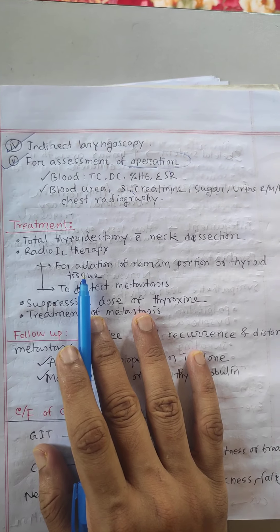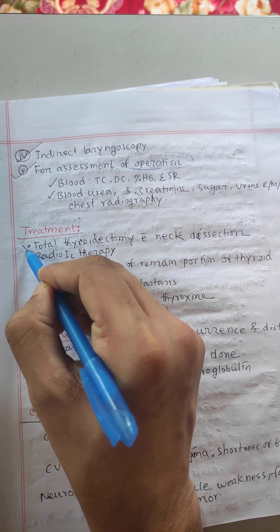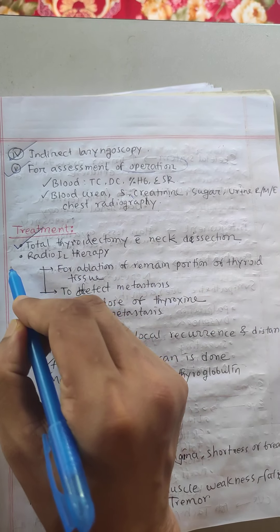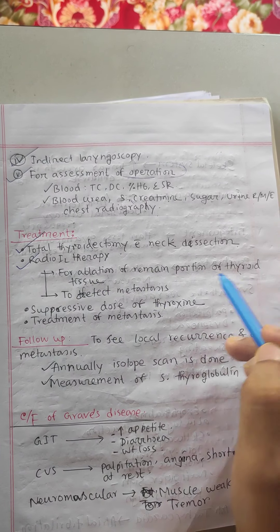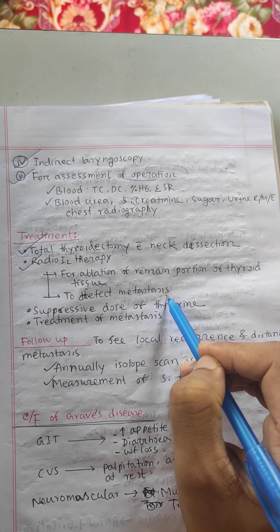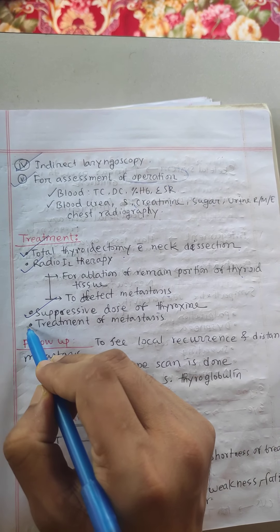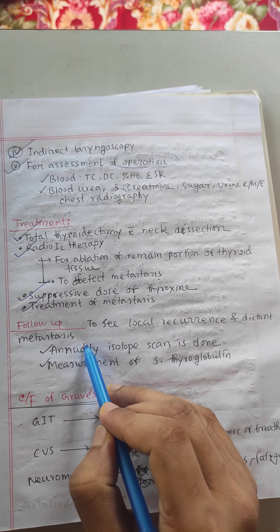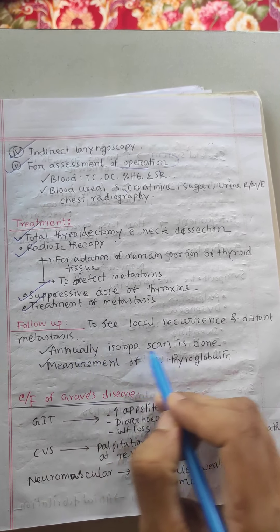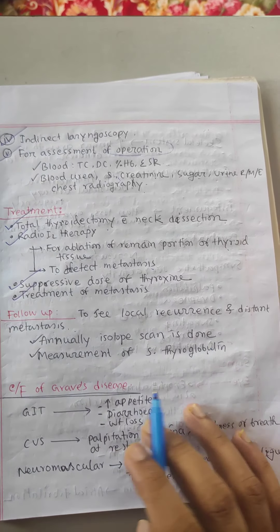Treatment - total thyroidectomy with neck dissection, radioiodine therapy for ablation of the remaining portion of thyroid tissue and to detect metastasis, suppression dose of thyroxine, and treatment of metastasis. Follow-up to see local recurrence and distant metastasis - annually isotope scan is done and measurement of serum thyroglobulin.